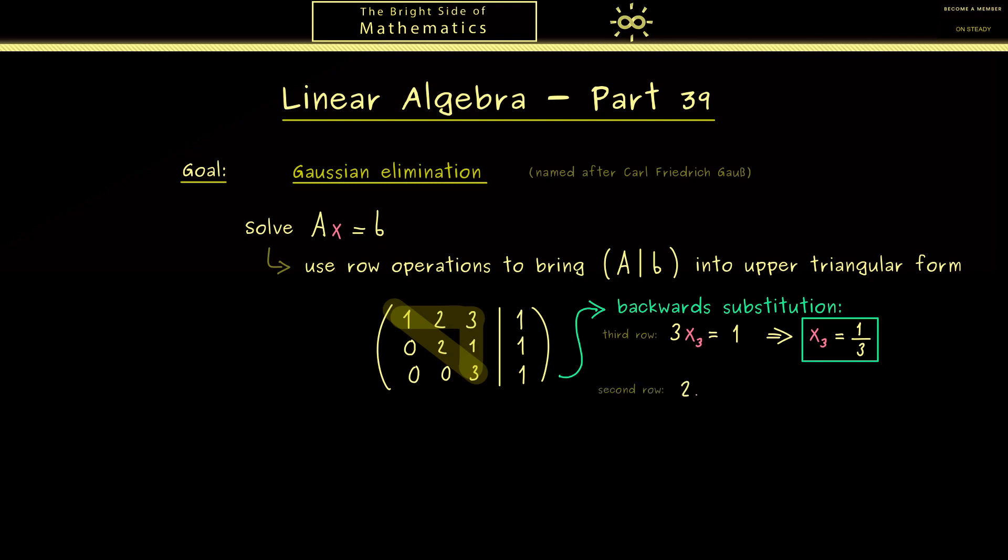We just have to put it into the equation of the second row. This one reads 2x2 plus x3 is equal to 1. Hence, after putting in the number for x3 the only thing that remains is an equation with one variable. So, we conclude that we now know which value x2 has to have. In fact, in this case it also turns out that it has to be 1 third. But of course the exact numbers are not important here just the process how this backward substitution works.